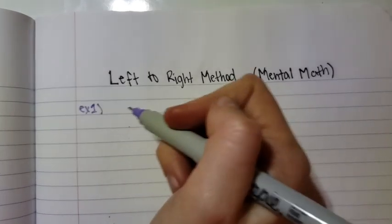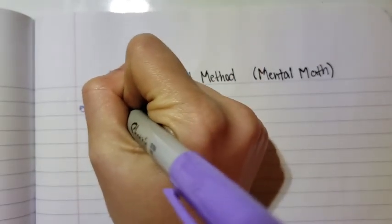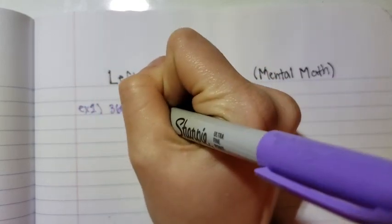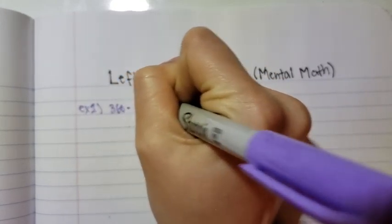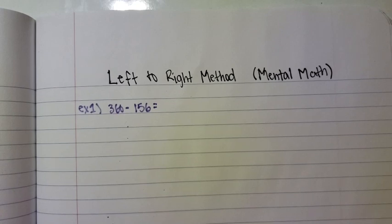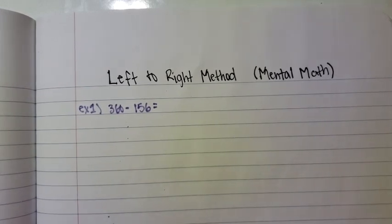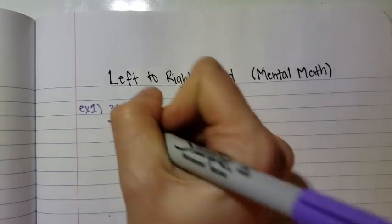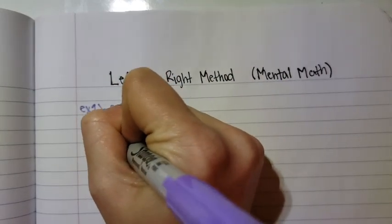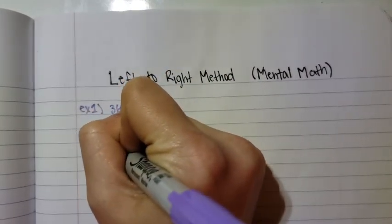The first problem we are going to do is 360 minus 156. The first thing we got to do is, like we did in some other methods, write in standard notation. So, 360 minus 156.